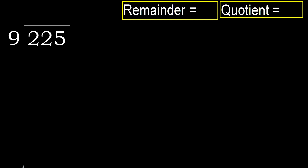225 divided by 9. 2 is less, therefore next. 22 is not less, therefore with 22. 9 multiplied by which number is nearest to 22 but not greater?